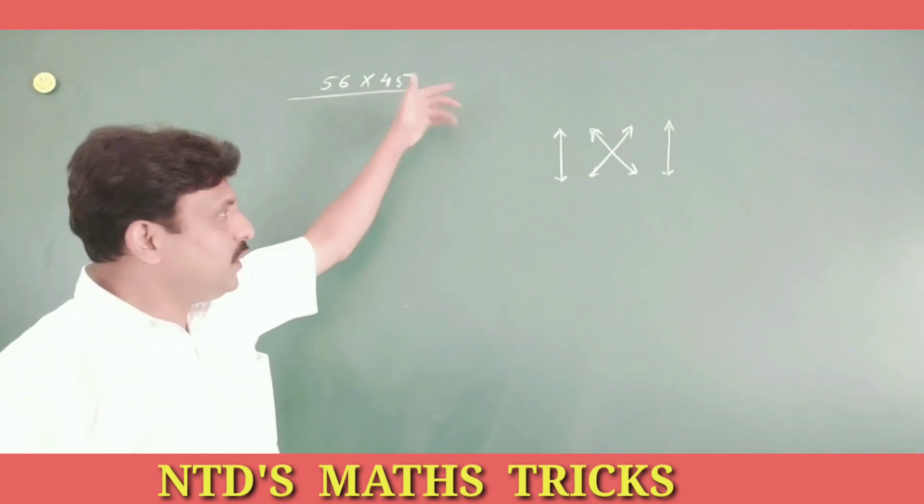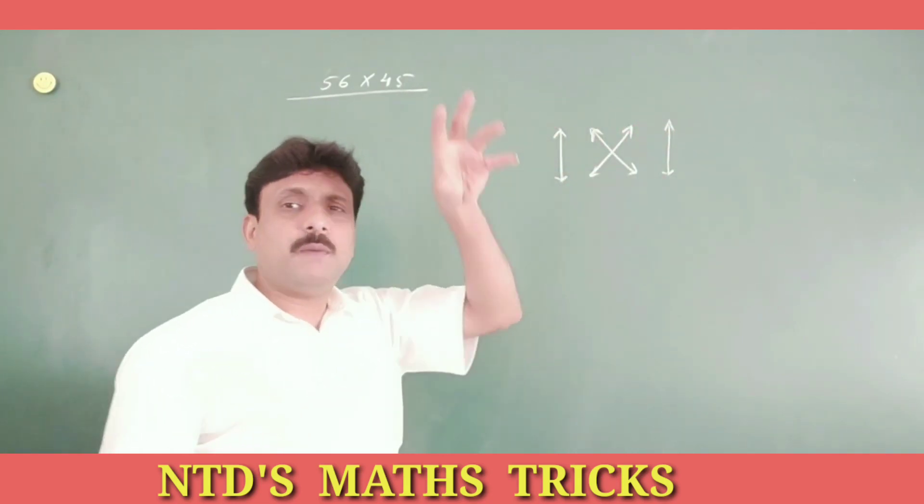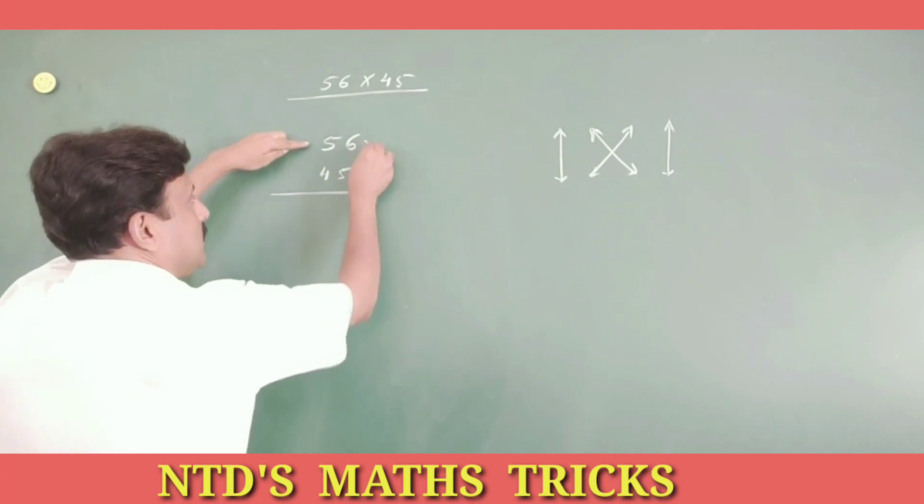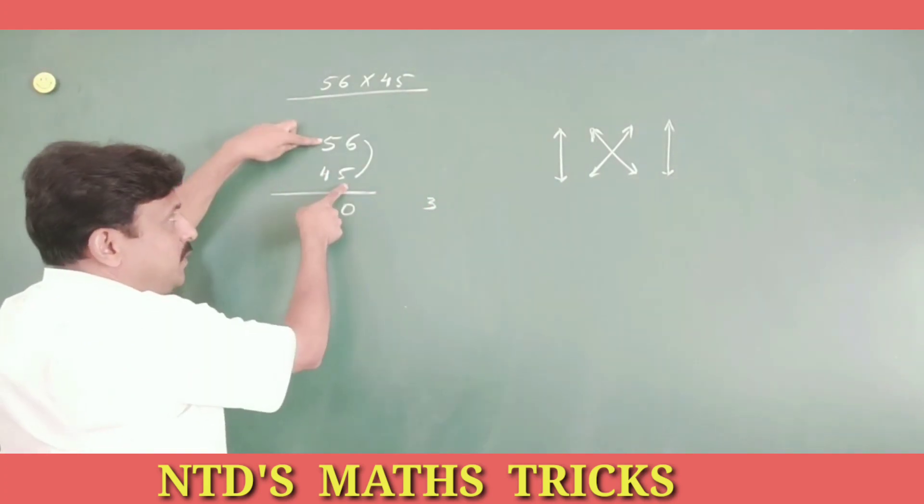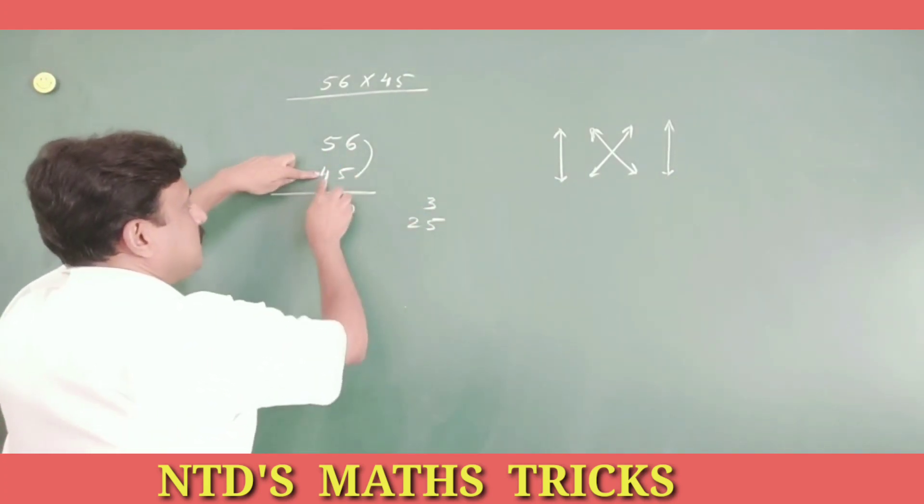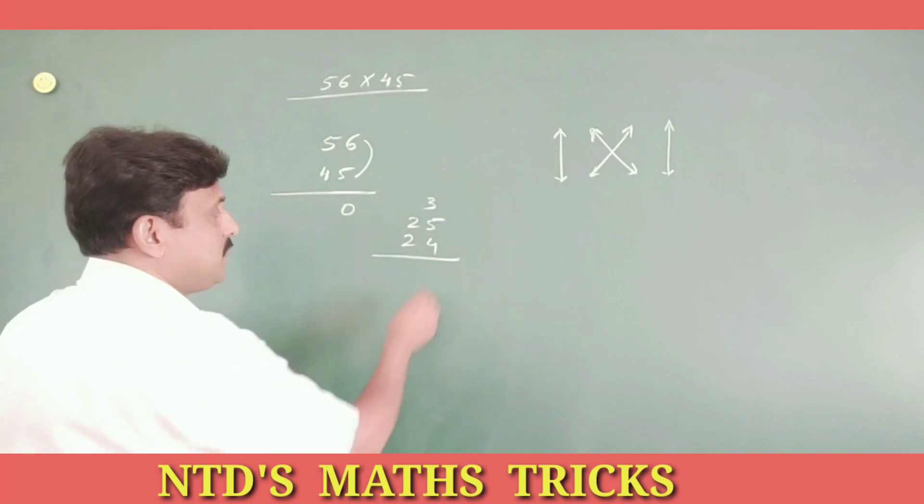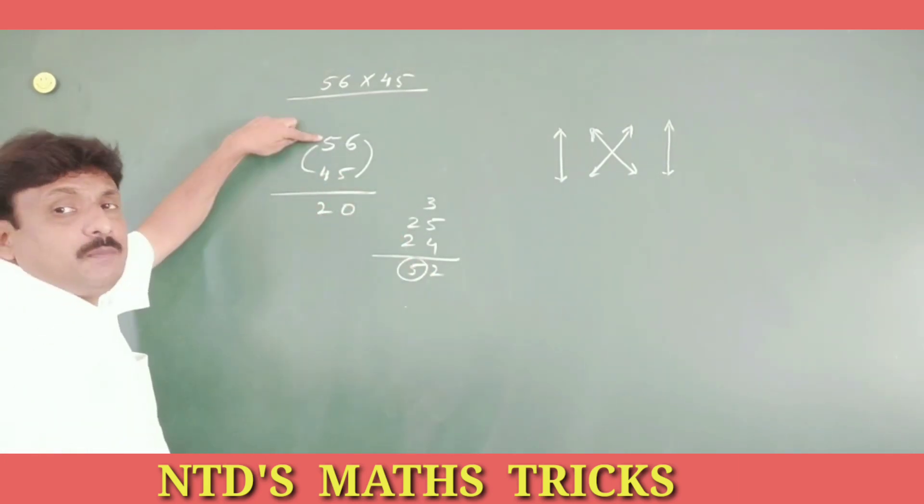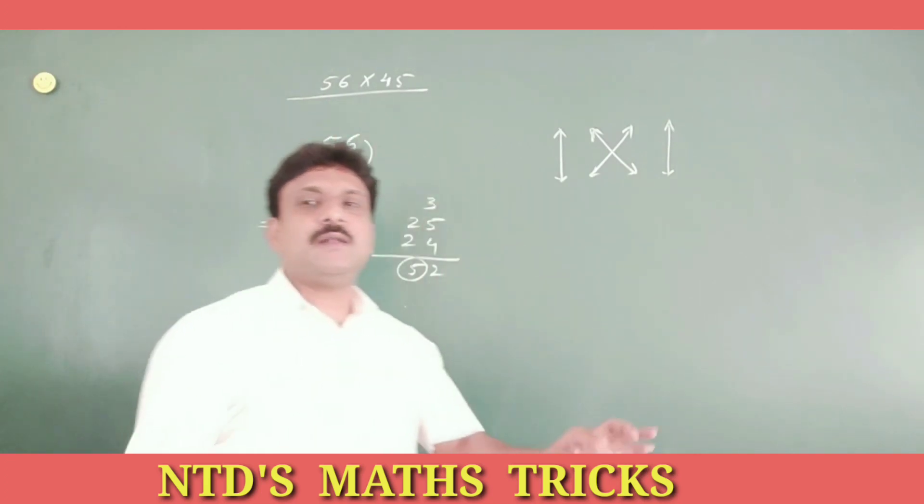36 into 45, use this magical trick. Unit place cross multiplication, 10 place multiplication. Unit place multiplication, 6, 5s are 30, 3 carry. Cross multiplication, 5, 5s are 25, 6, 4s are 20, 4, add this 3. So 5 plus 4, 9, 9 plus 3, 12, 1 carry, 2 plus 2, that is 5. Write 2 here, 5 carry. 10 place multiplication, 5 powers are 20, 20 plus 5, 25. This is the magical trick.